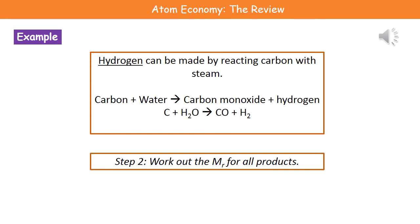Step two is to work out the molecular masses for all of the products. We don't need to worry about anything on the left-hand side of the arrow — just focus on the right-hand side: carbon monoxide and hydrogen. For carbon monoxide, that's one carbon and one oxygen: 12 plus 16 gives us 28. For hydrogen, H₂ means two hydrogen atoms, so 2 times the atomic mass of hydrogen (which is 1) gives us 2.